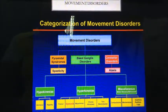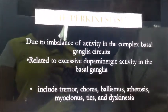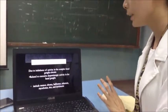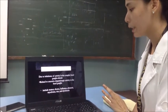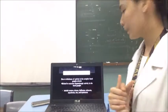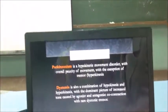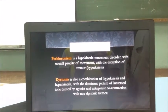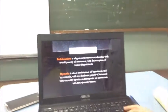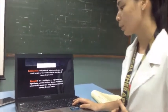Among these three, we are going to discuss the hyperkinesias — the hyperkinetic movement. Due to imbalance of activity in the complex basal ganglia circuits related to excessive dopaminergic activity in the basal ganglia, it includes tremor, chorea, ballismus, athetosis, myoclonus, tics, and dystonia. There is also Parkinsonism, a hyperkinetic movement disorder with overall paucity of movement with the exception of tremor. Dystonia is a combination of hypokinesis and hyperkinesis with the dominant picture of increased tone caused by agonist and antagonist co-contraction with rare dystonic tremor.